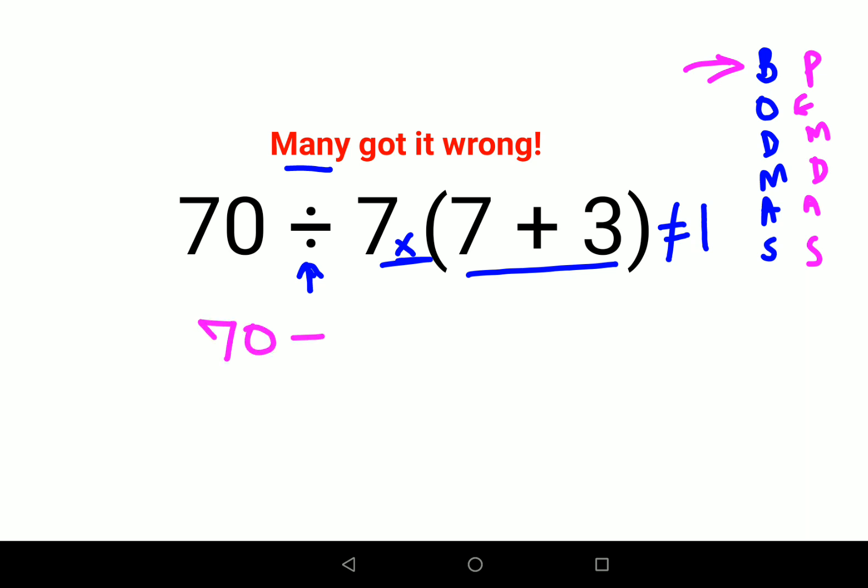So 70 divided by 7 into 7 plus 3 gets you 10. Now this is where discrepancy happened.